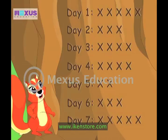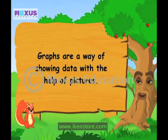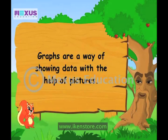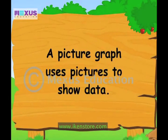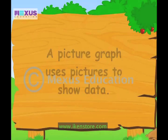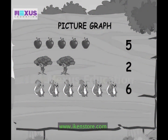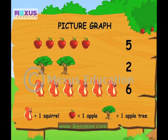That is the beauty of using graphs. Graphs? Yes, Amber, graphs. Graphs are a way of showing different amounts with the help of pictures and figures. The items we count are called objects. A picture graph uses pictures to show data. Instead of using a cross or a tick mark, you can also use colorful pictures to count the objects. For example, the apples that you ate. All those squirrels look exactly like me. You can see here that each picture stands for one object. So this graph shows five apples, two trees, and six squirrels.